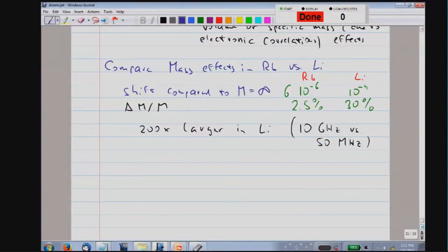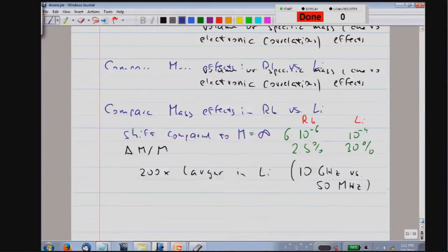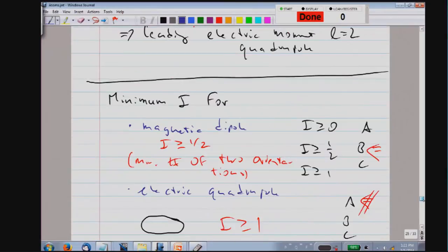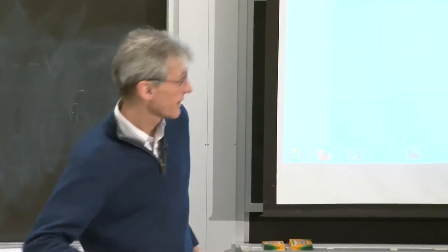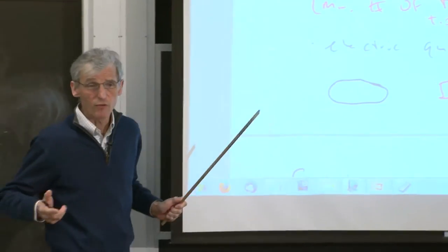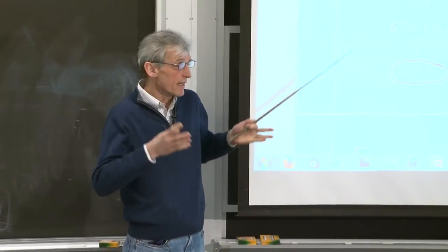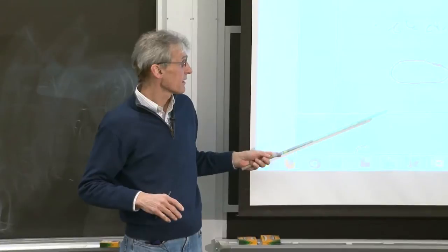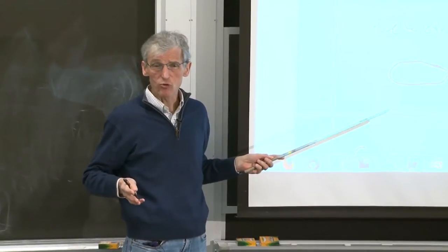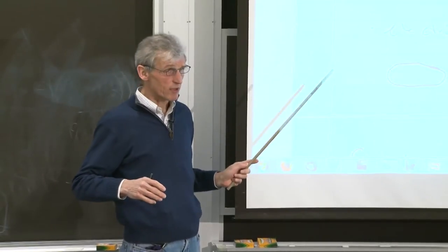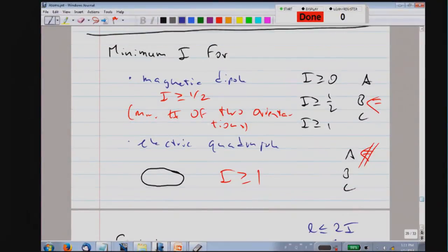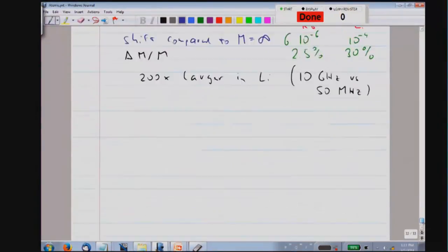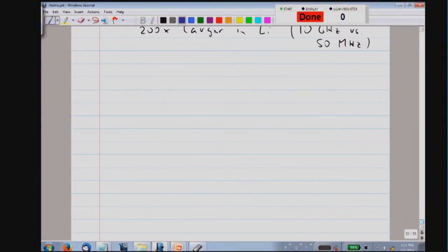Let me come back to one other question we discussed last class: if you have a deformation of a nucleus, or any kind of anisotropic shape, what is the angular momentum needed in order to observe it? I know a lot of you got confused, so I want to discuss the same thing again, focusing on two different frames — the lab frame and the body-fixed frame.